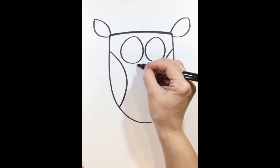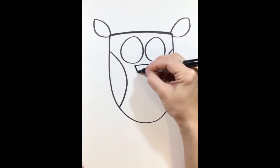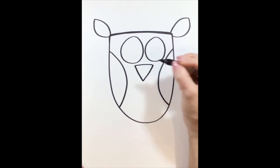Our next step, we're going to add the beak to our owl. It is going to be an upside down triangle, and it's going to go right underneath the two eyes.